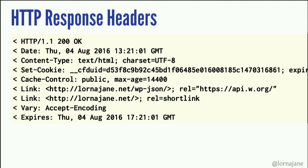The response headers that come back from that request look like this. I've got a 200 OK — this is good. There's a date, a content type — my website serves text/HTML. There's some caching stuff: cache control, references to other links, more caching headers, and an expires header. So that's the HTTP response. We don't see this stuff in the browser — you get a picture of an angel and some blurb. But the headers that come back give us all the information we need to understand the body payload that was returned.